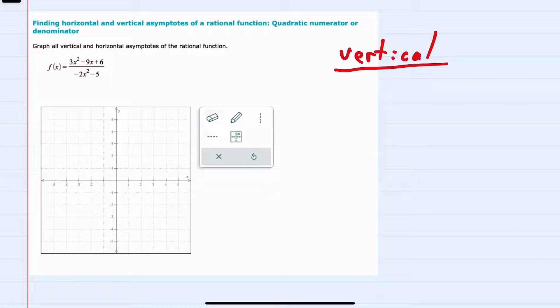Here I can see that in the numerator I could factor out a 3, and I would be left with x² in the first term, minus 3x in the second term, and plus 2 in the third term. In the denominator, I only have two terms: the -2x² and the -5. I can't factor out a common factor, and it's not the difference of two squares.